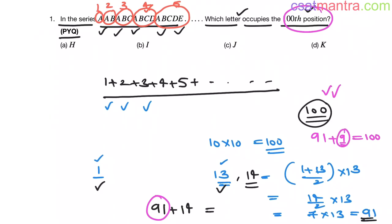Now, 91 plus 9 is 100. Now, what is the 9th letter? That is I. I is the 9th letter. So our answer is B, my friends.